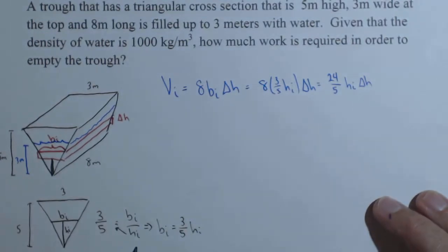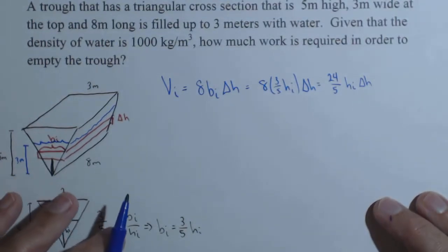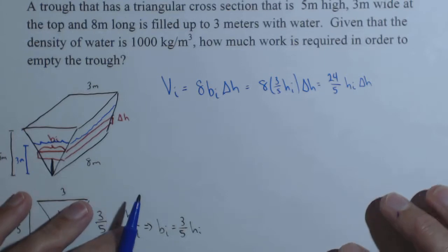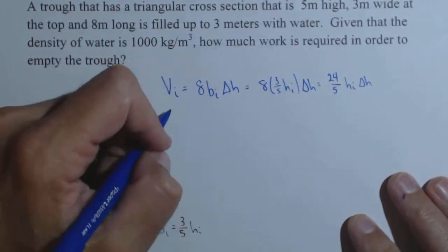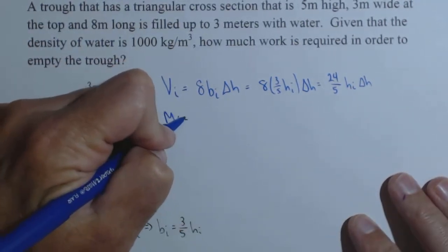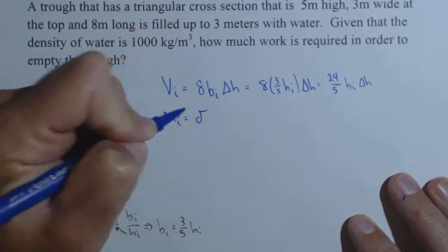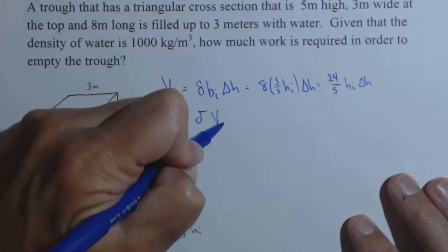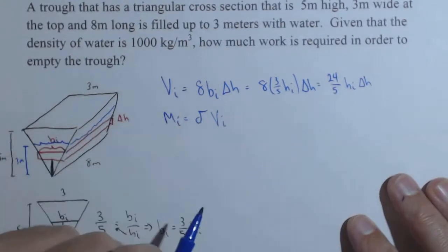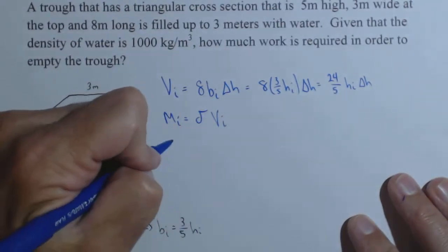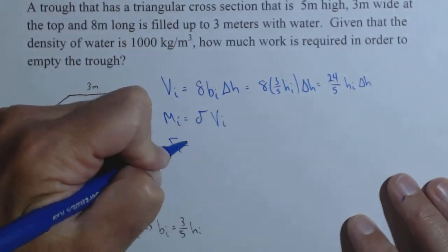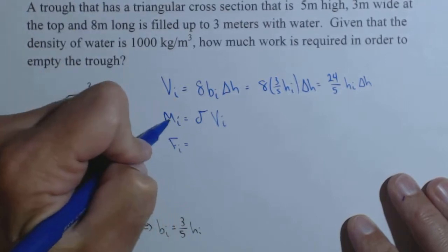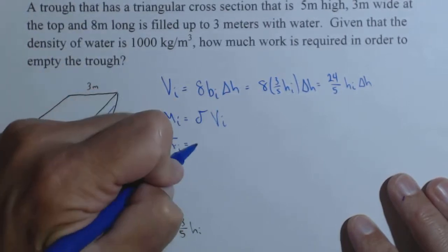We now have the volume of the i-th slice. We need to turn that into a mass, and then into a force. Those are actually pretty easy. The mass of the i-th slice is just our density times the volume of the i-th slice. So it's just our density times this.